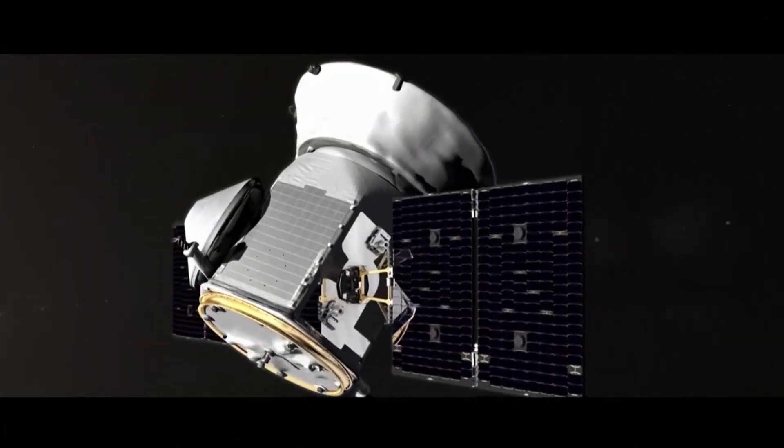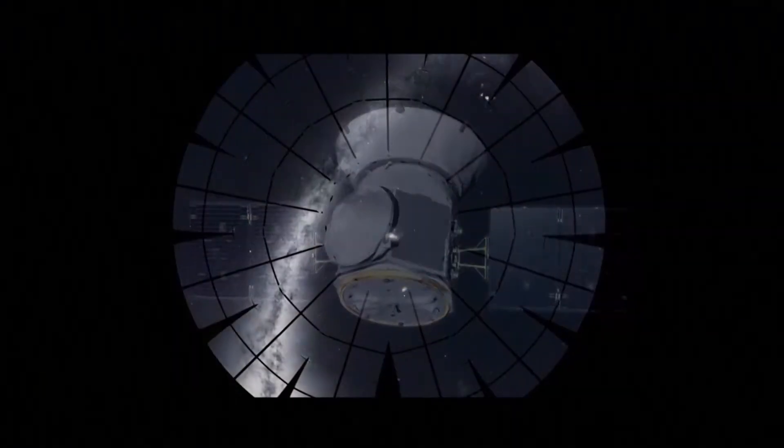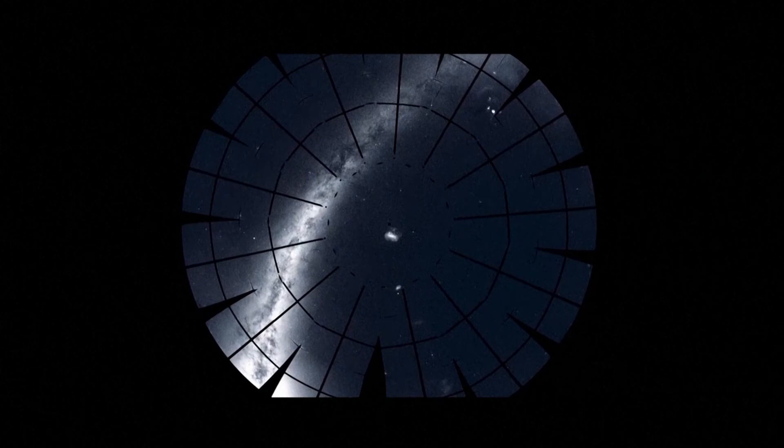TESS will observe hundreds of thousands of eclipsing binaries, so there may be other planets similar to TOI 1338b waiting to be discovered.